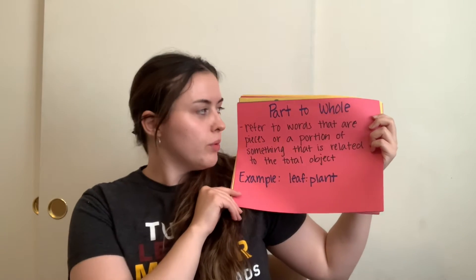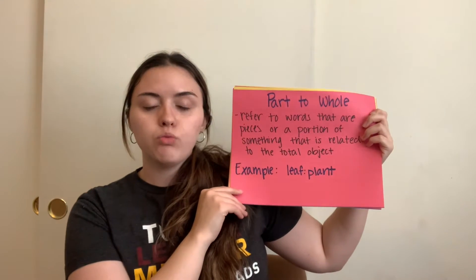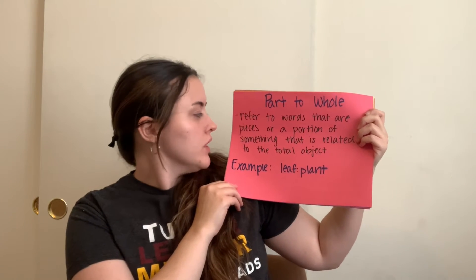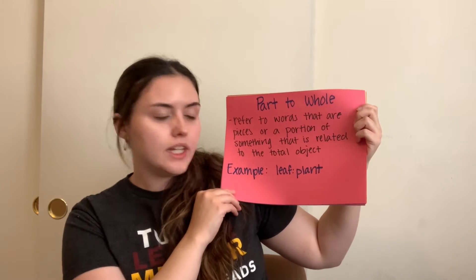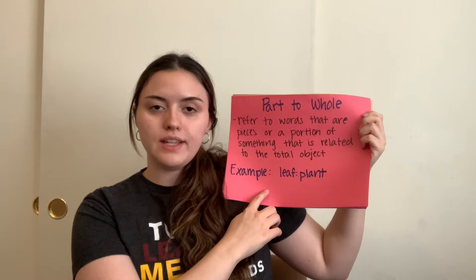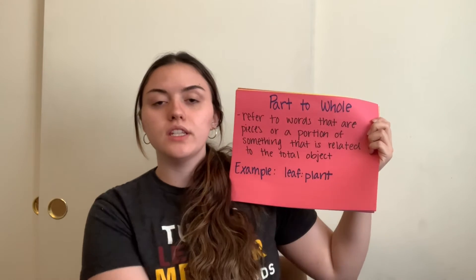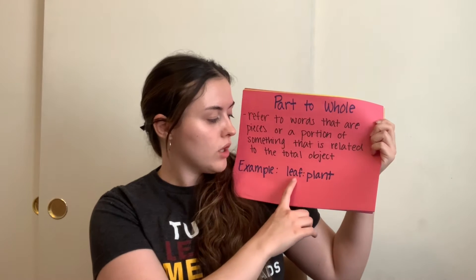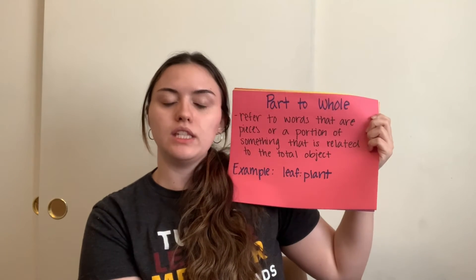Another word relationship we have is part to whole. This word relationship is seen when referring to words that are pieces or a portion of something related to the total object. For example, leaf to plant — a leaf is a small part of a plant, so this is a part to whole relationship between these two words.